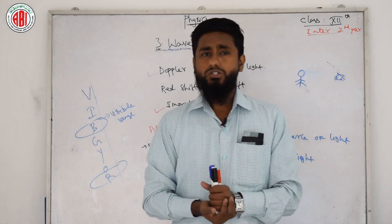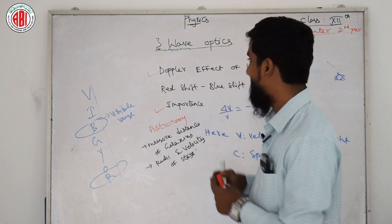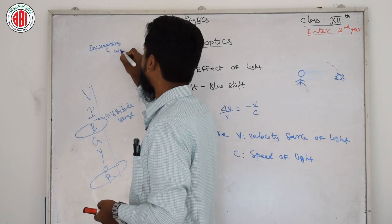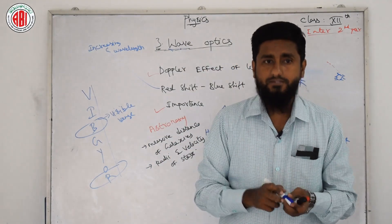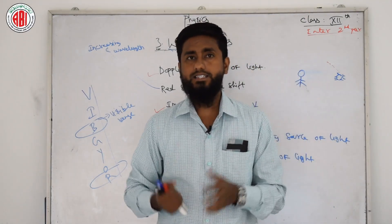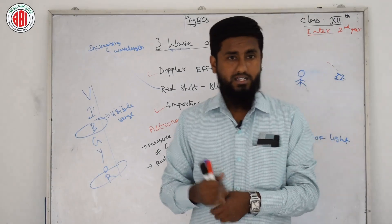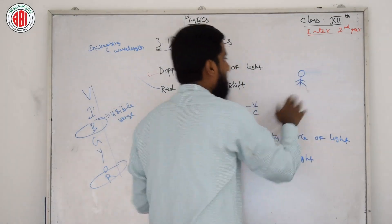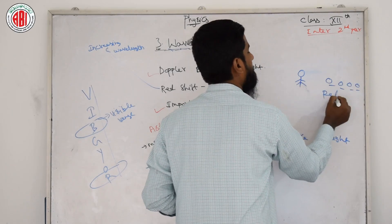An increase in wavelength due to the Doppler effect is called red shift. In red shift, the wavelength is increasing. It occurs when light or other electromagnetic radiation from a source is moving away from the observer. When the source moves away from the observer, the red shift arises.